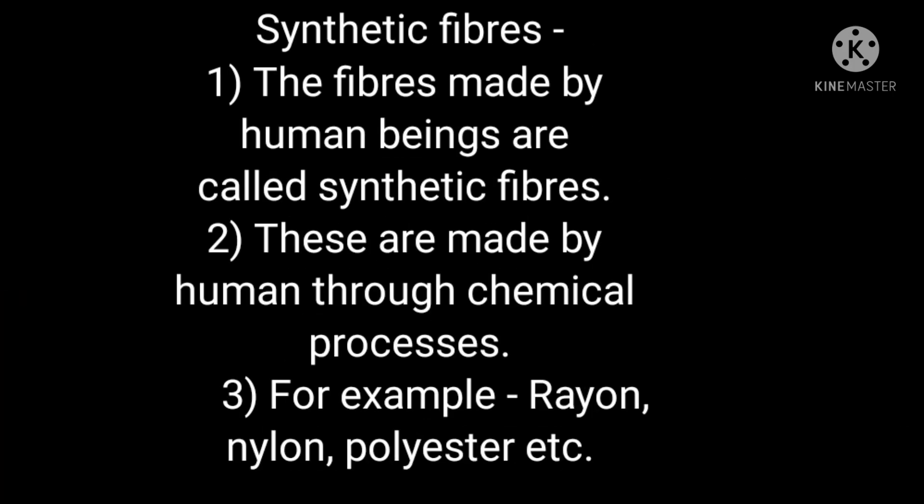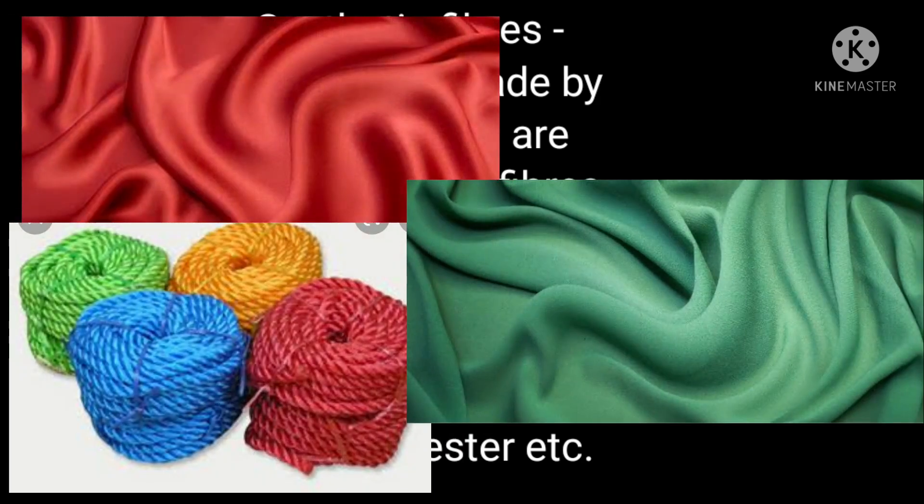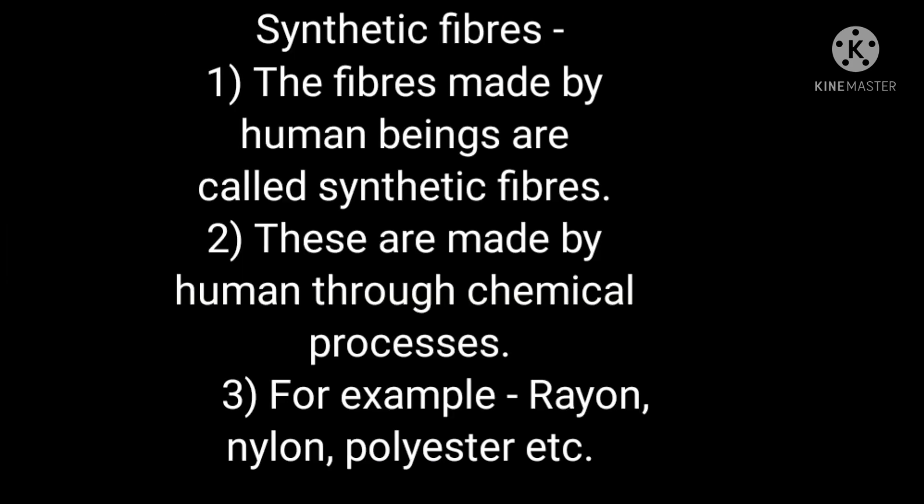Now let's see synthetic fibres. The fibres made by human beings are called synthetic fibres. These are made by humans through chemical processes — this you have already seen in my previous video. For example, rayon, nylon, polyester, etc.